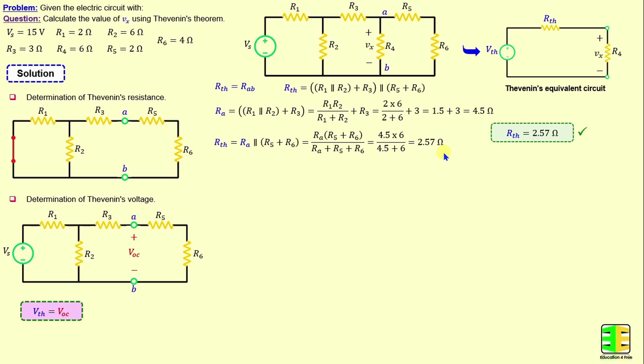To calculate the open circuit voltage Voc, I will apply the nodal analysis method. I define I1 as the current through R1, I2 as the current through R2, I3 as the current through R3, and I4 as the current through R5. Applying Kirchhoff's current law at node A gives I3 − I4 = 0, because we have an open circuit at that terminal.